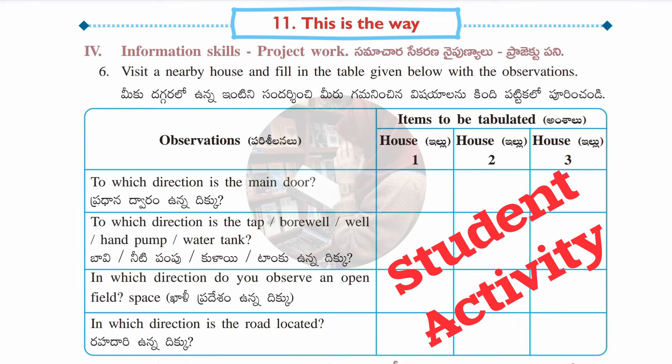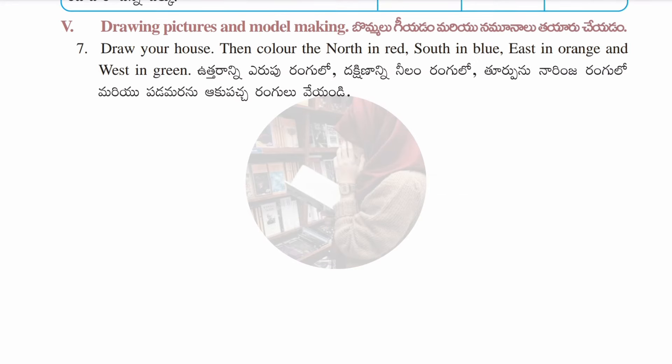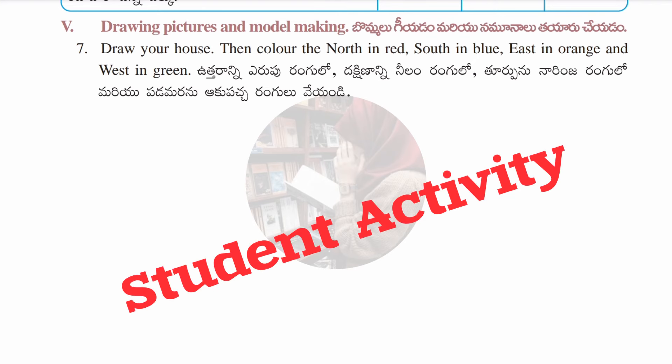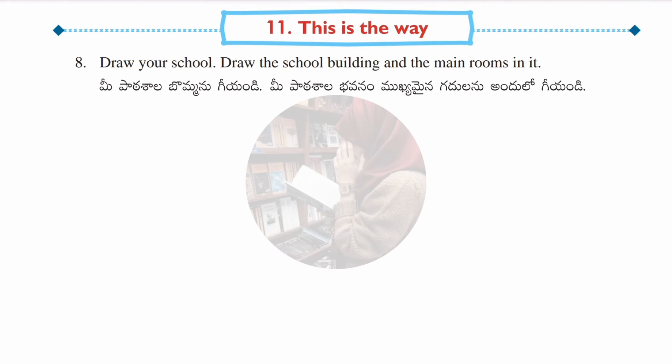Parents watching, please help your kids fill in the project table. Fifth section — drawing picture and model making: draw your house and color north in red, south in blue, east in orange, and west in green. This is a student activity you have to do by yourself.